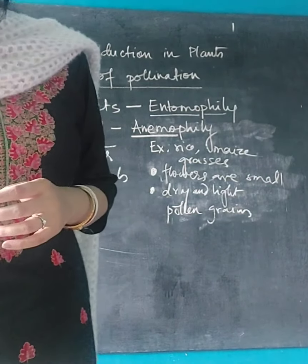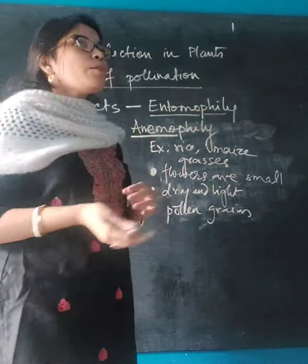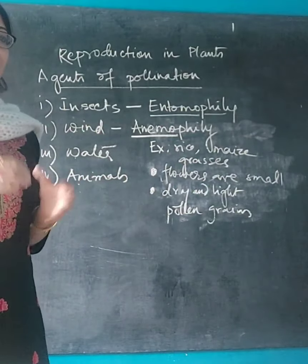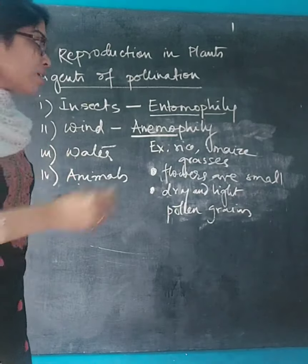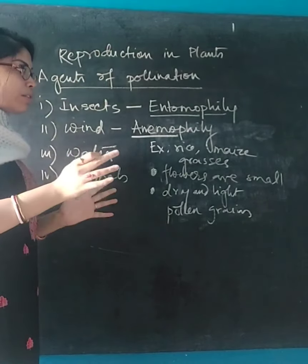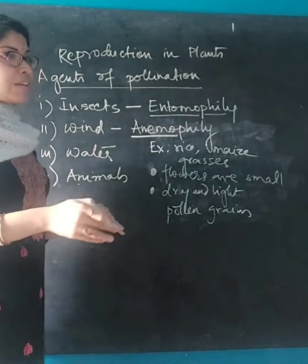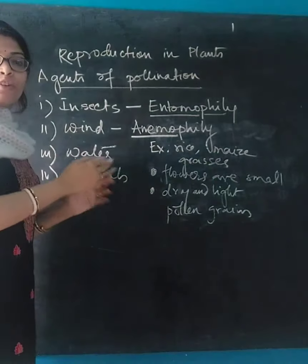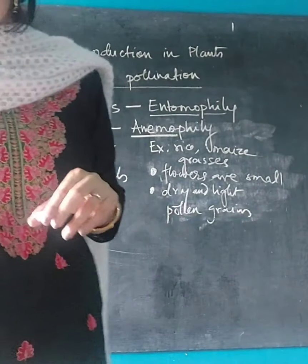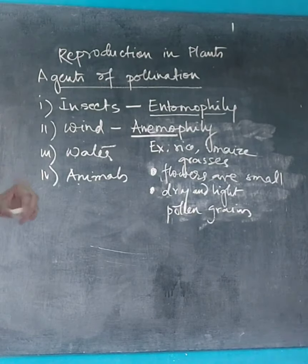Pollen grains are produced in very large quantities so that at least some have a chance to reach the stigma. As mentioned when discussing cross-pollination, there is always a high chance of a large number of pollen grains being wasted during transfer by wind. As a result, a large amount of pollen grains must be produced initially so that at least some reach the other flower. The style projects out and has a large feathery stigma so that pollen flying in the wind can be easily received.